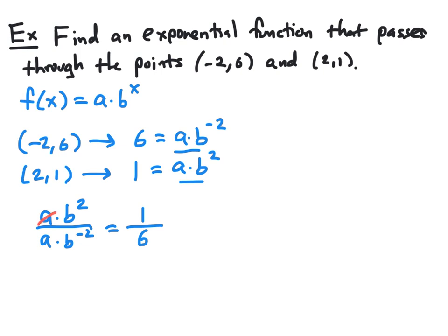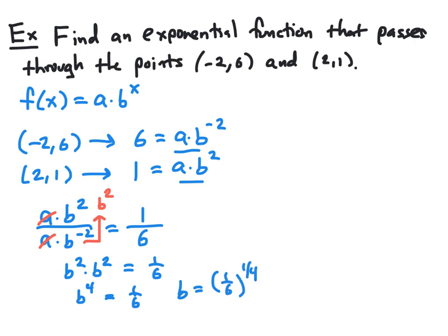This is a nice equation because the a values cancel. Moving b^(−2) to the numerator makes the exponent positive, leaving b^2 · b^2 = 1/6. Since b^2 · b^2 means we add exponents, we get b^4 = 1/6. To find b, we raise 1/6 to the 1/4 power, equivalent to taking the fourth root. Using a calculator, b is approximately 0.6389.